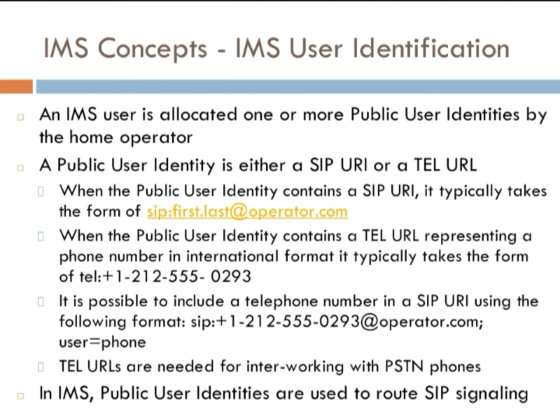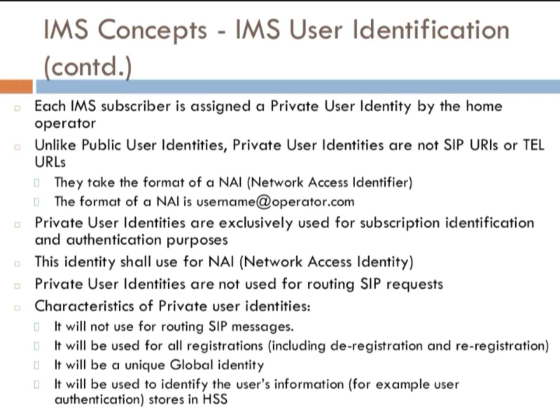Then user identification: there are two types of identities — public user identity and private user identity. Both are provided by the home operator only. The home operator provides a public user identity that is either a SIP URI or TEL URI — a phone number or extension. Private user identity uses NAI — Network Access Identifier — in the format username@operator.com.